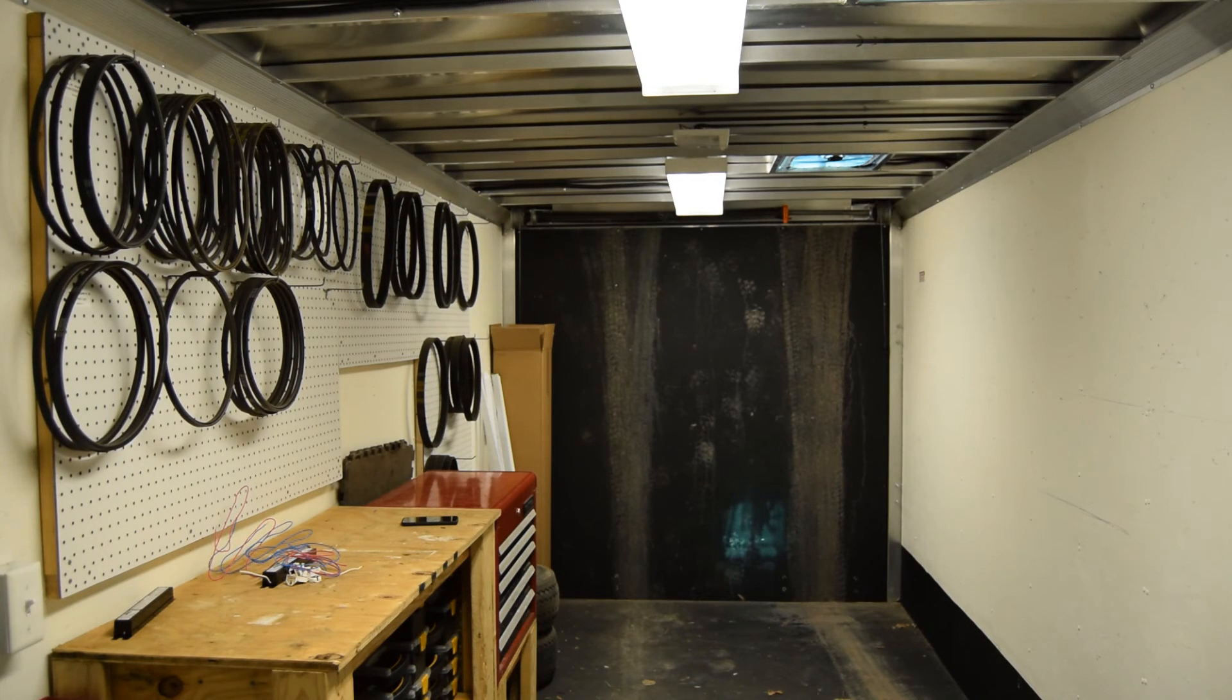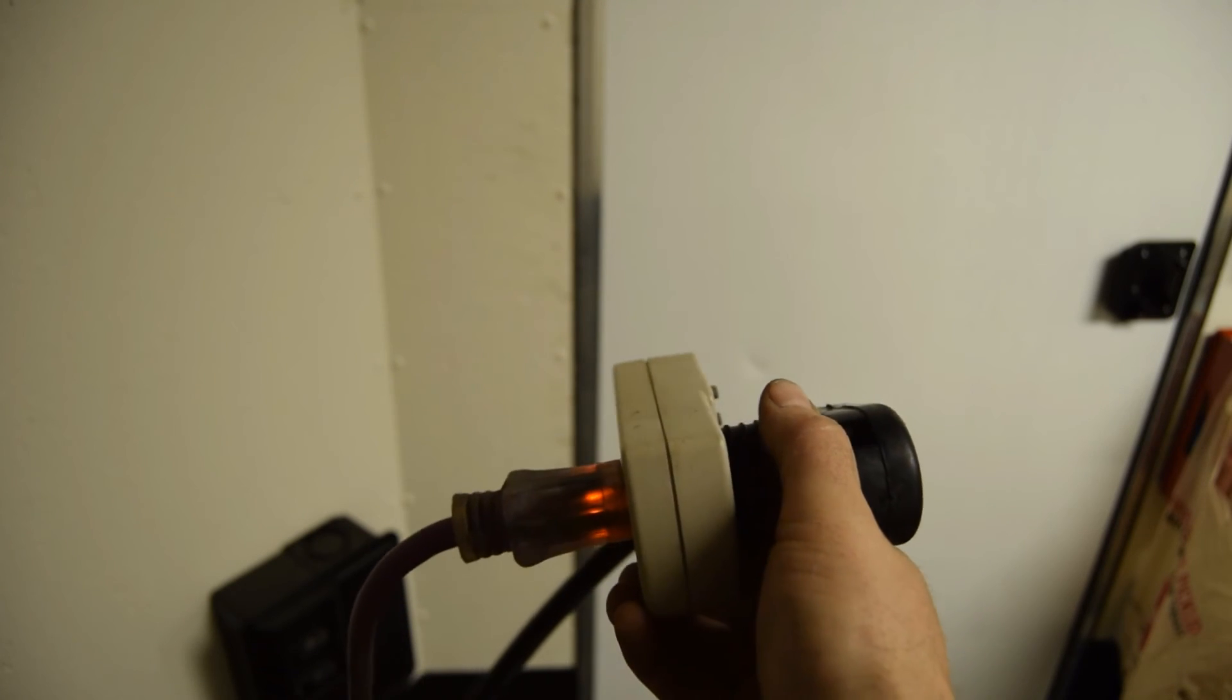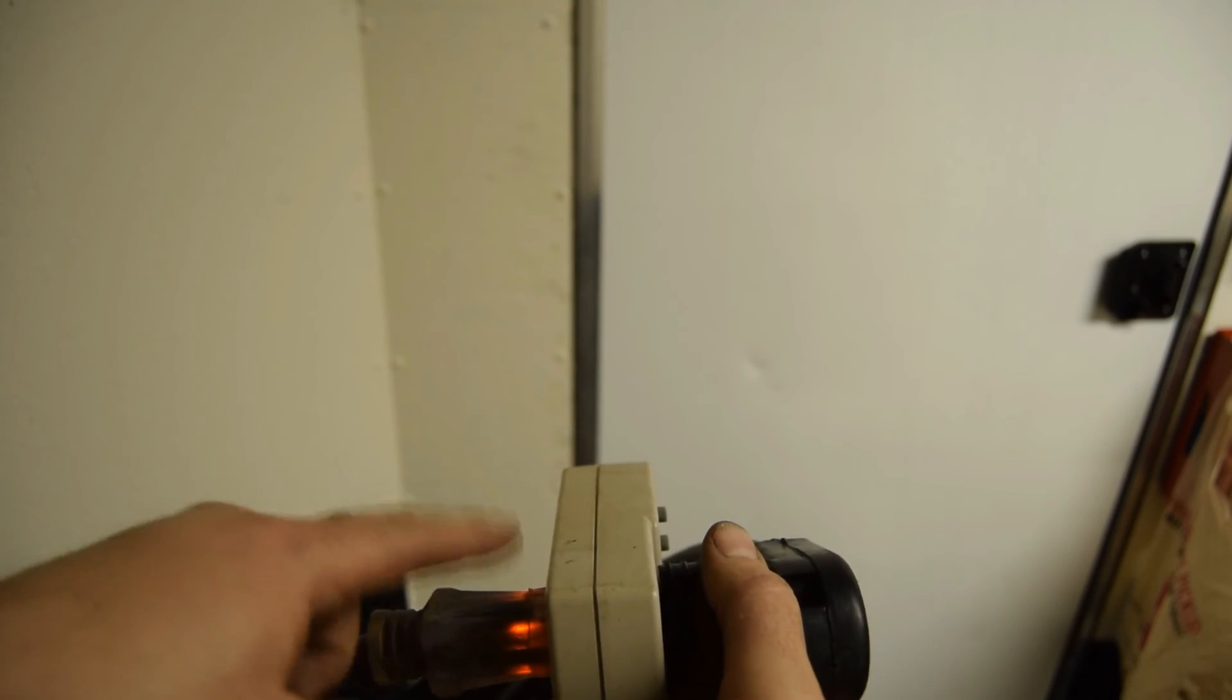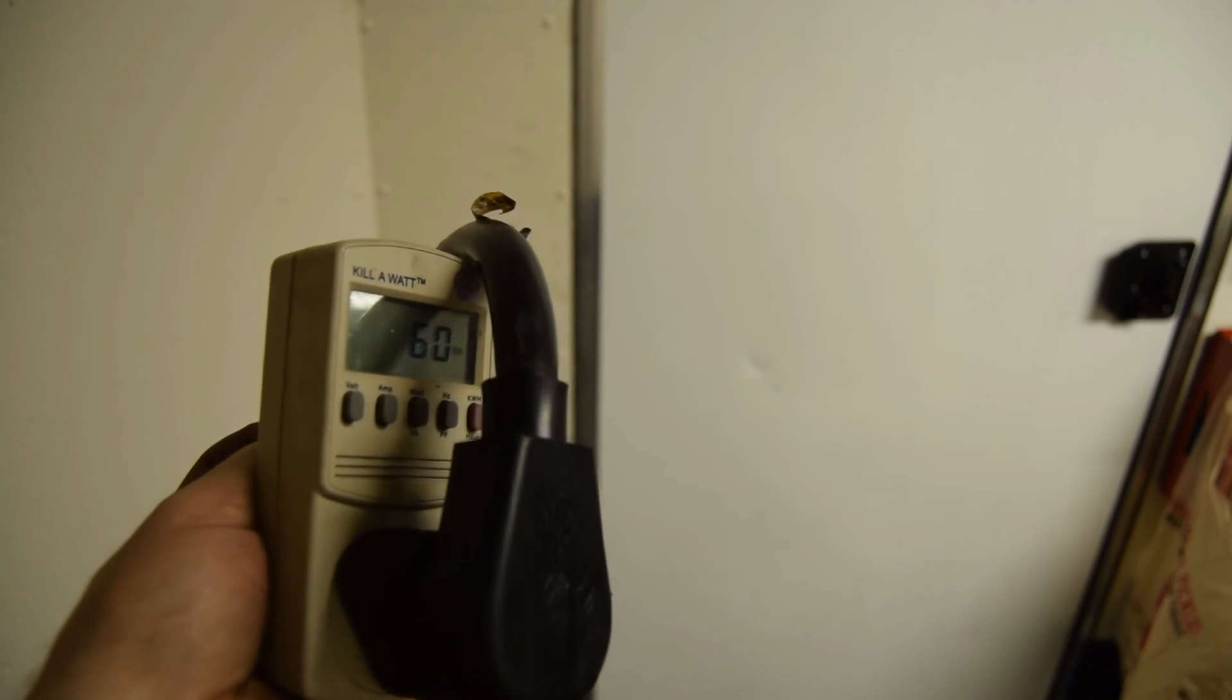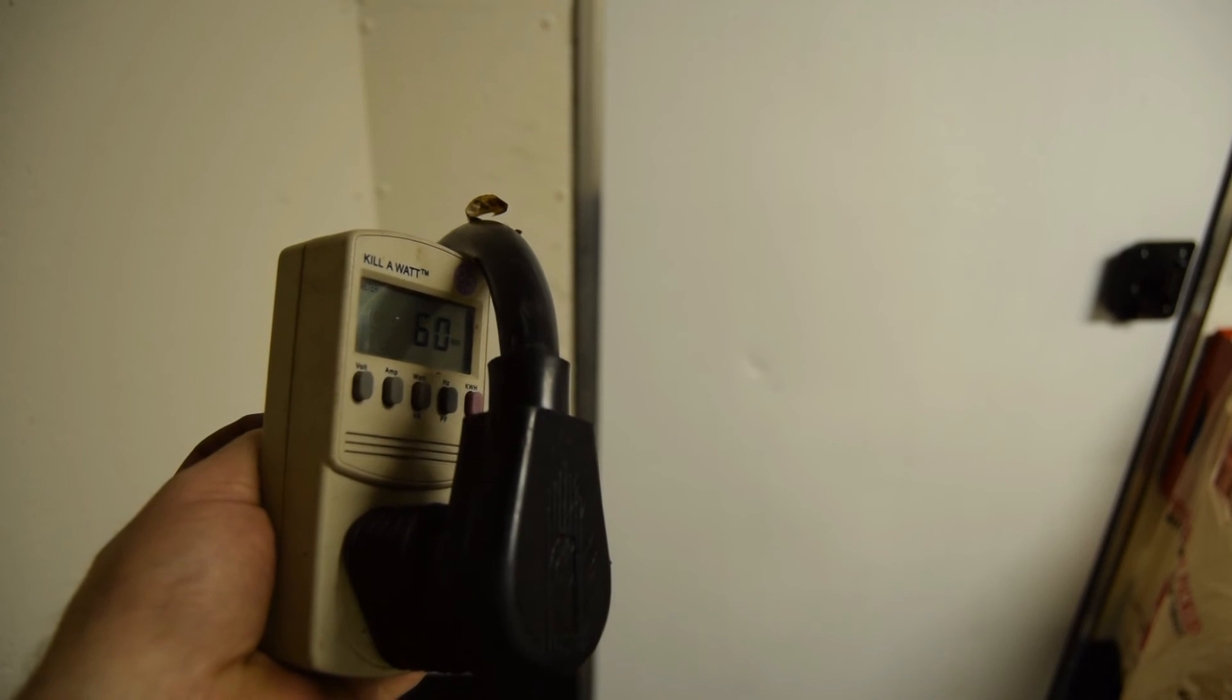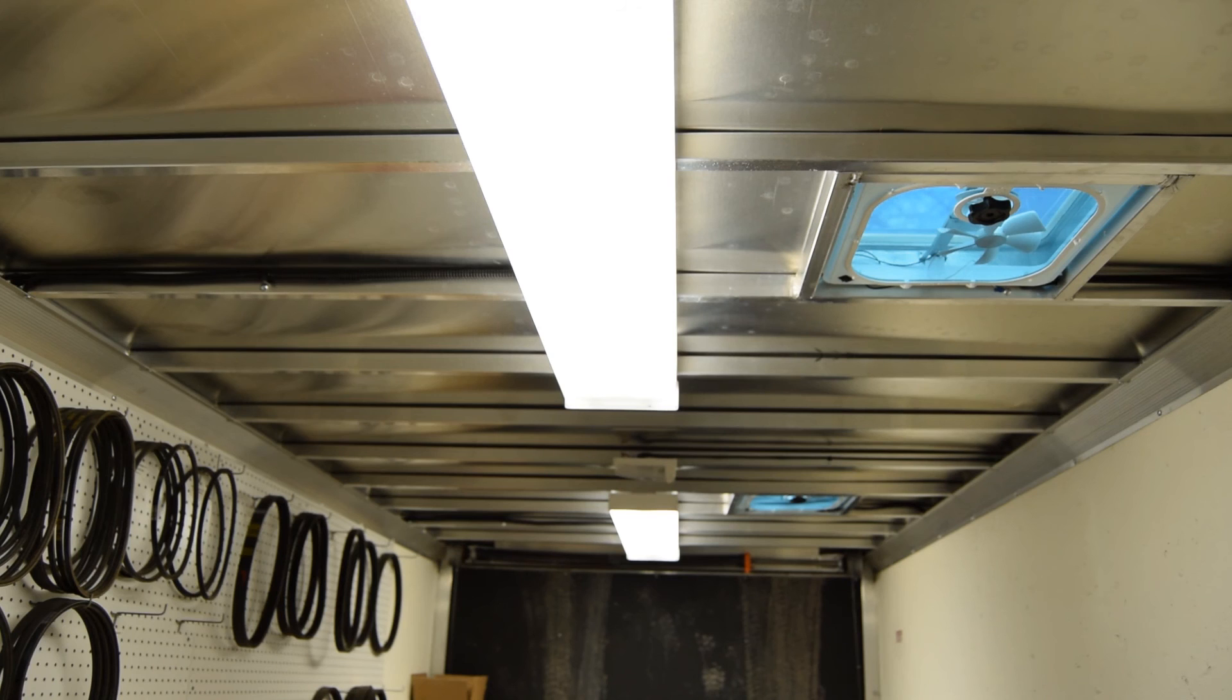I guess the only thing left to do now is just to see how much power they're using. All right, so this is a GFI rated outlet cord, so I'm measuring power. I got the trailer plugged right into the watts meter. Sixty watts. That's pretty good. So yeah, that's pretty impressive coming down from 112 watts of a fixture and now I'm down to 60 watts. That's pretty good. I'm pretty happy with that outcome.